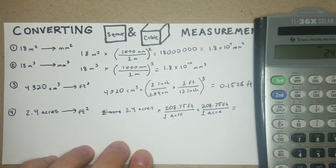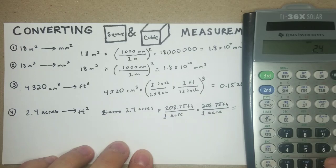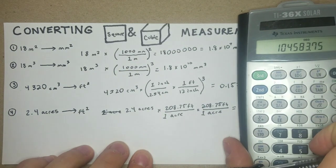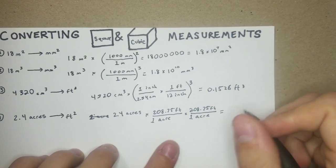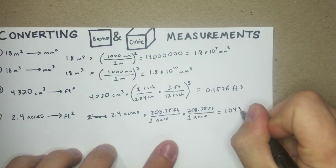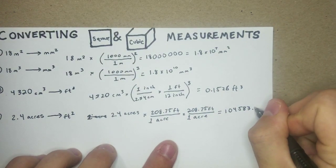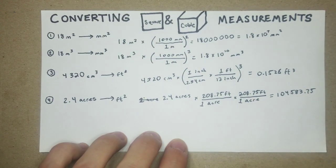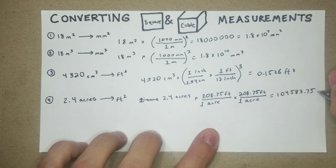2.4 times 208.75 times 208.75 equals, it's a pretty large number there, but that's what we're going to get. 104,583.75. You can round that if you want to use sig figs, but that's going to be feet squared.